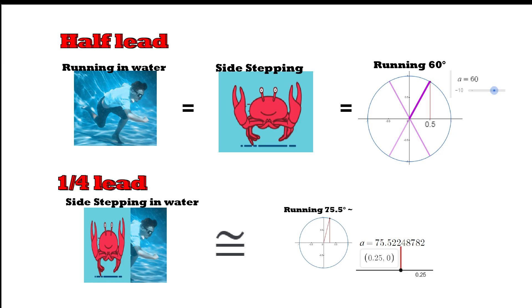What if I told you that running in water, sidestepping, and running at a 60-degree angle all have the same lead — alpha lead? More about that later.